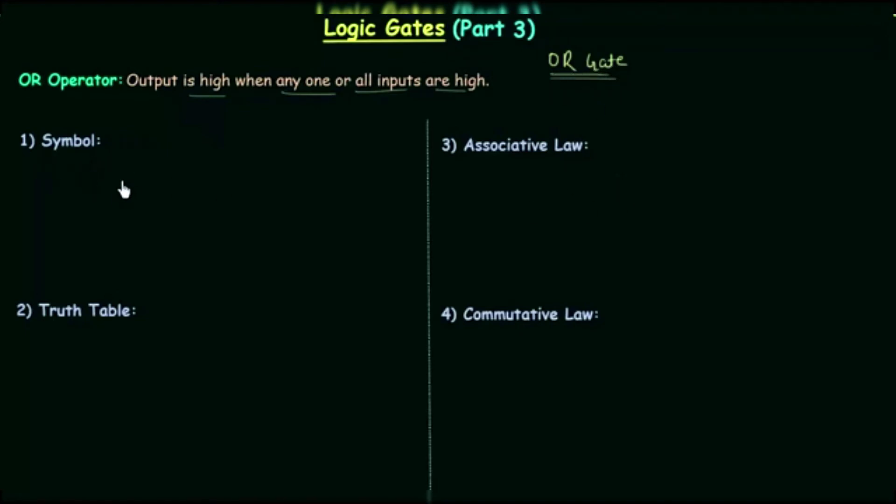First thing that we have to discuss is symbol for OR gate. I will make two input OR gate. Y is the output and I will have two inputs, A and B. So Y is equal to A OR B. This plus here is OR operator. This is not the sum that we do in mathematics. This is simply OR operator.